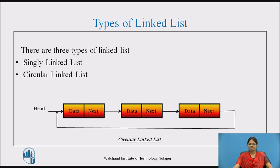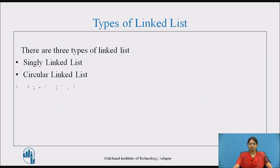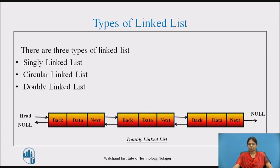A circular linked list, where the last node is not terminated by null. Instead, a link is taken from it and pointed to the first node. A doubly linked list, which consists of two links — one link going to the next node and the other going to the previous node.